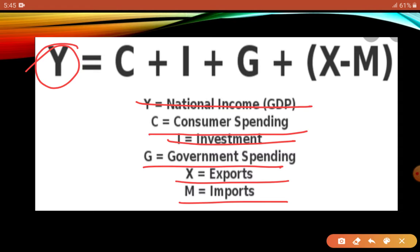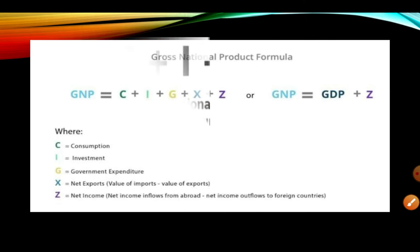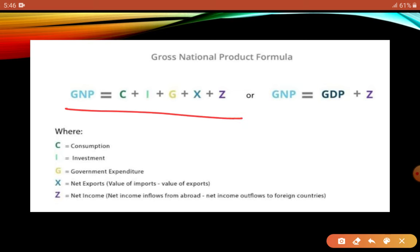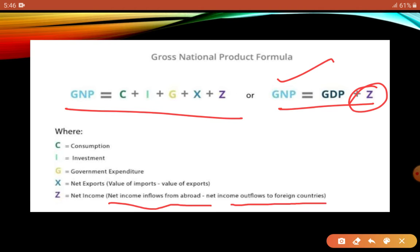Now for GNP — Gross National Product. Rather than memorizing a long formula, remember this: GNP = GDP + Z, where Z is net income from abroad. Z equals net income inflows from abroad minus net income outflows to foreign countries. That means the net income that our citizens earn from other countries, minus the income that foreigners take away from India, gives Z. Add that Z to GDP and you get Gross National Product. I hope GDP and GNP are now clear.